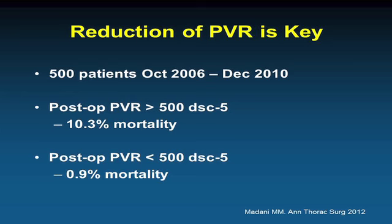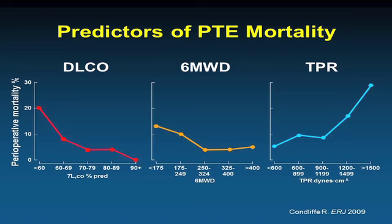Pre-operative predictors of mortality include low DLCO — suggesting significant microvascular disease — lower six-minute walk distance indicating more functionally compromised status, and higher pulmonary vascular resistance, since the higher the PVR, the greater the concern for significant microvascular disease that surgery won't address.